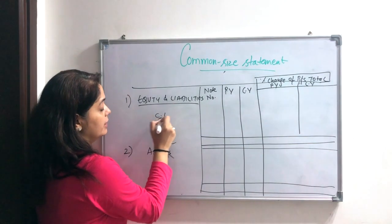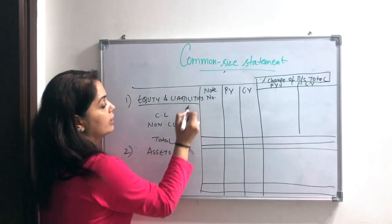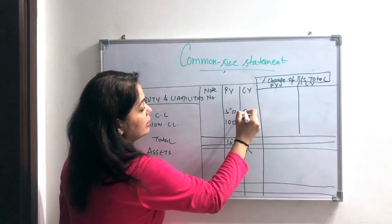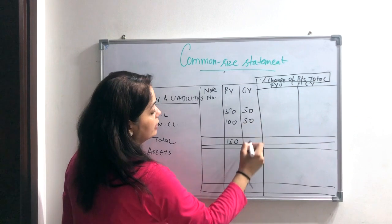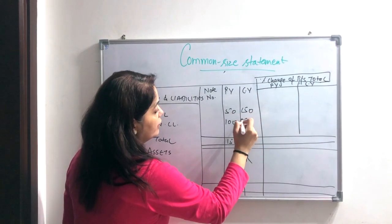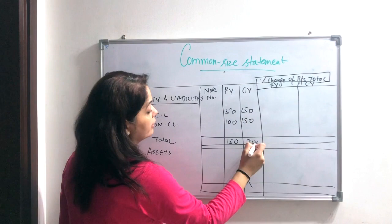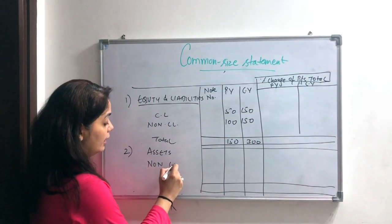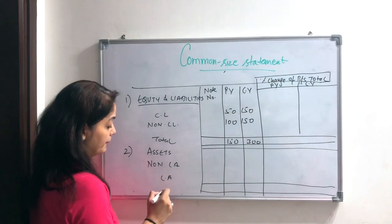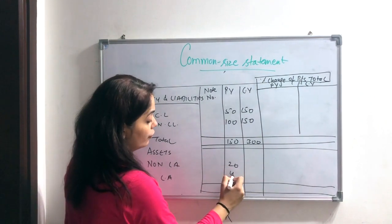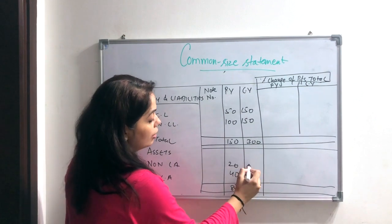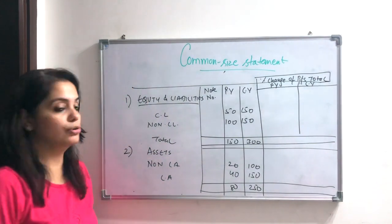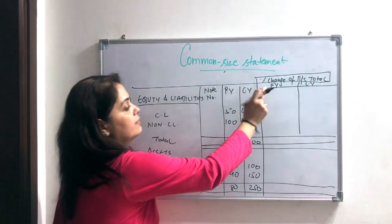For example, current liabilities and non-current liabilities — suppose current liabilities are 50 and non-current liabilities are 100, totaling 150 for previous year, and 150 and 150 totaling 300 for current year. On the assets side we have non-current assets and current assets — non-current assets 20, 40, 80, and current assets 50, 50, giving 150 and 150.